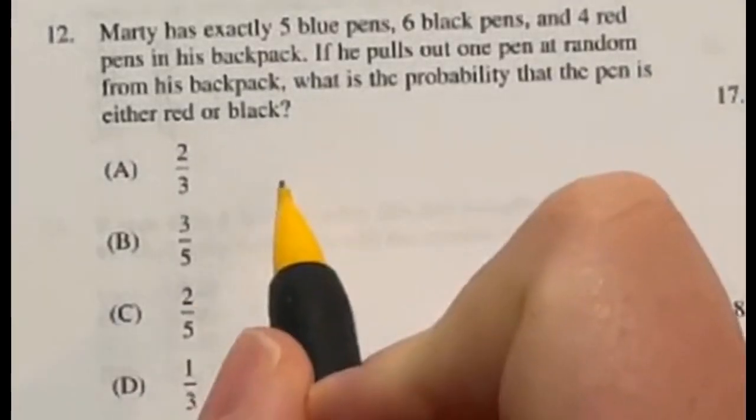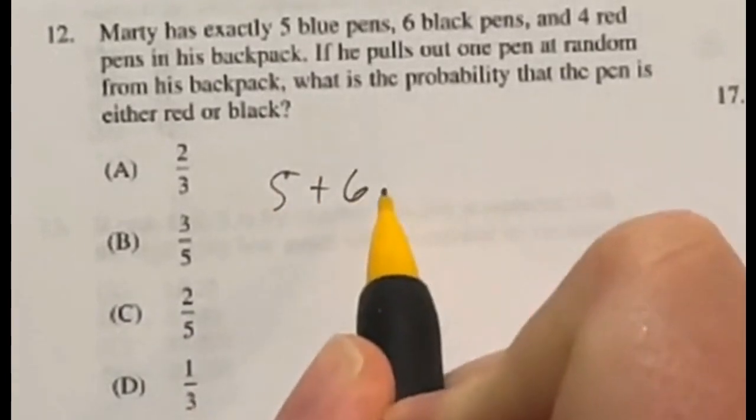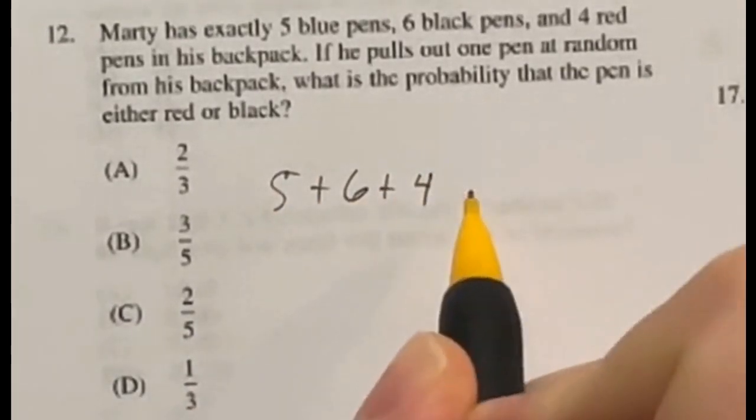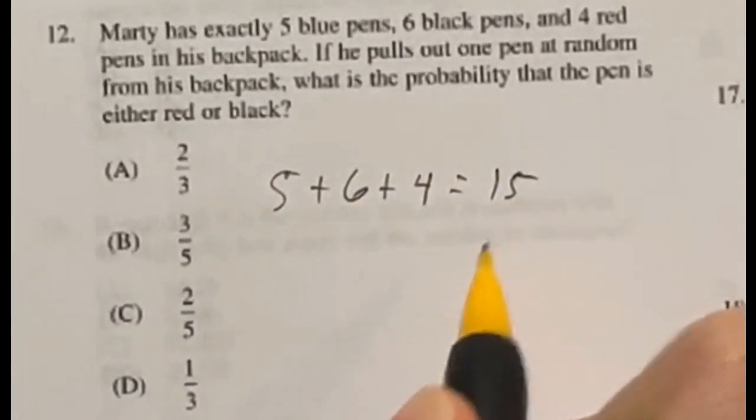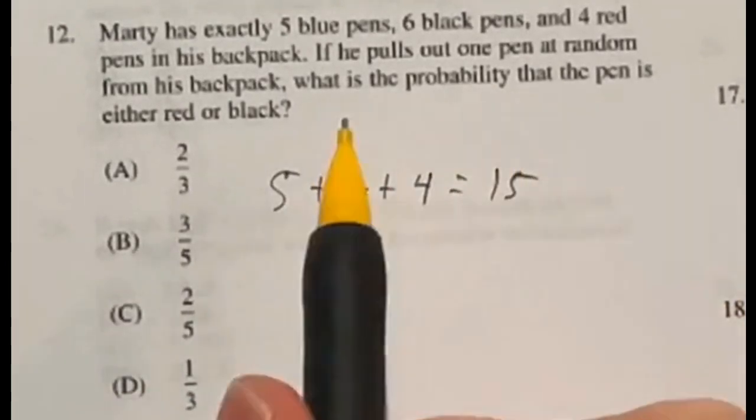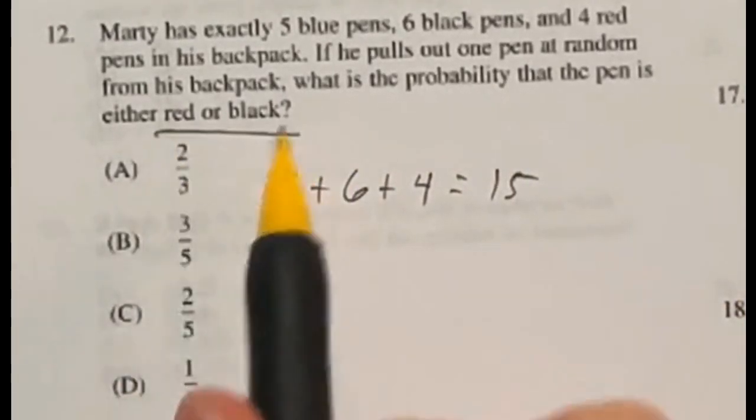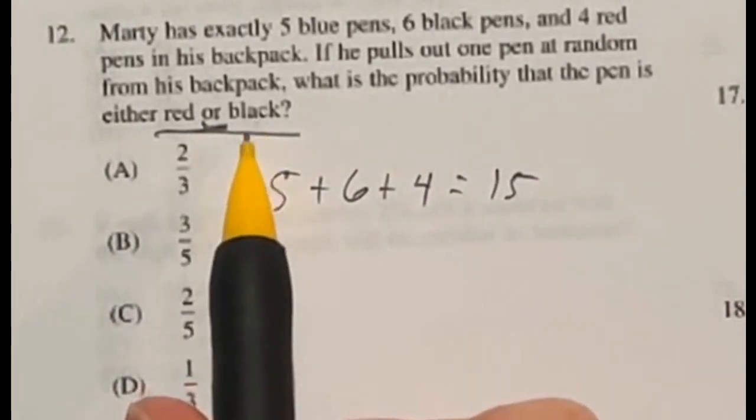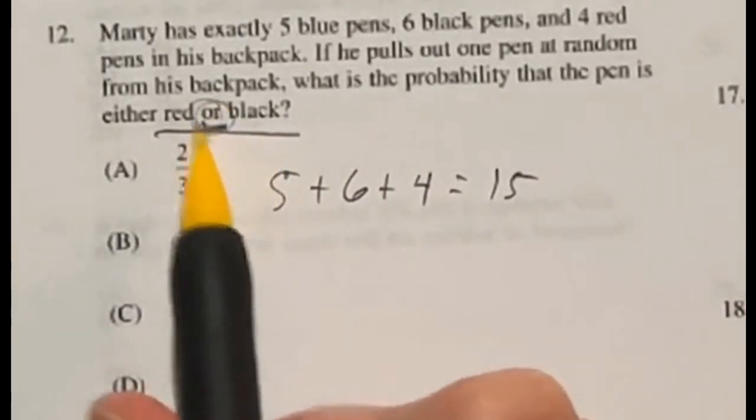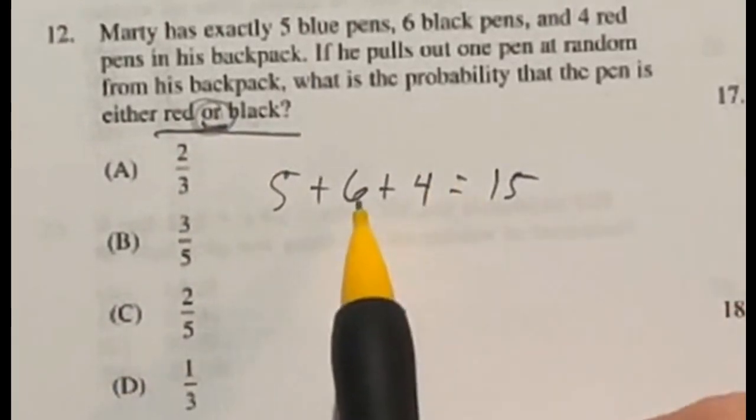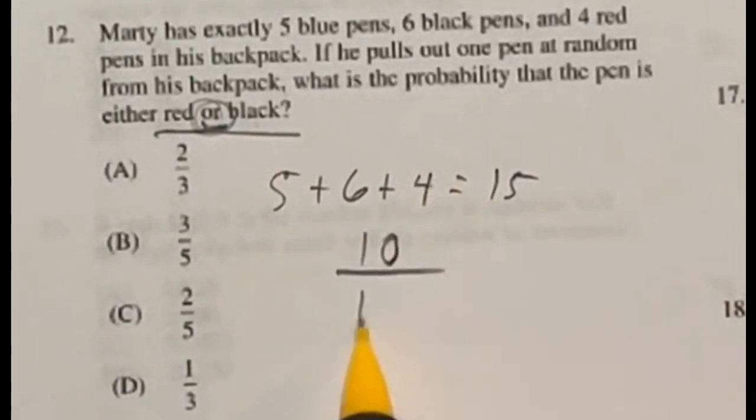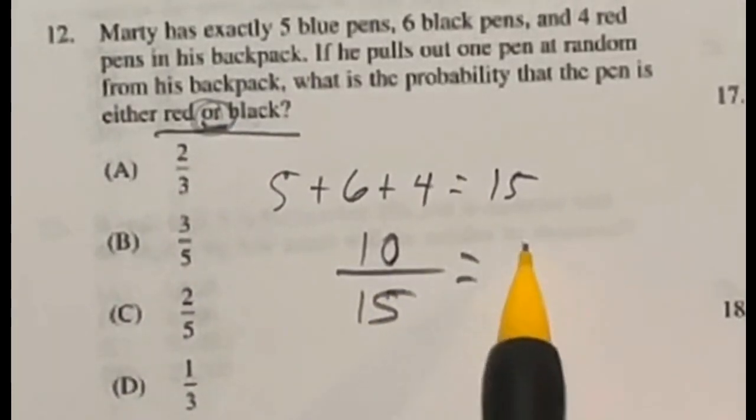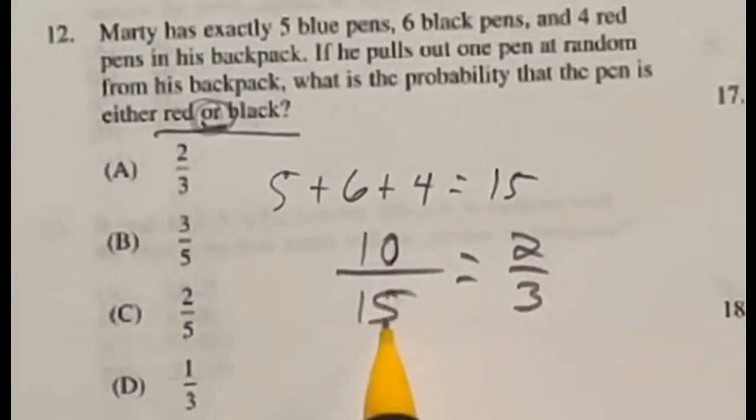So for number 12, we have 5 blue pens, and we have 6 black pens and 4 red pens. Altogether, that gives us 15 pens. And they want to know the probability that we pull out one pen and it's red or black. Or means that it could be either red or black, and you add those two together whenever you're dealing with an or. So that means I'm going to do 6 plus 4 gives me 10 out of the 15 would be our probability here. So 10 over 15 reduces to 2 over 3 when you divide both top and bottom by 5. So our answer is A.